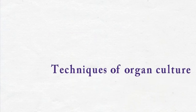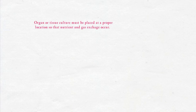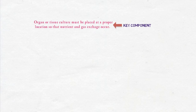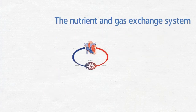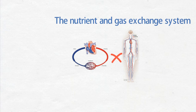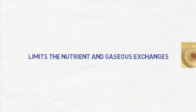The most important requirement of organ culture or tissue culture is to place them at such a location so that optimal nutrient and gas exchange occur. Nutrient and the gas exchange system play an important role in the technique of organ culture because there is no vascular system as in our body in the organ culture. This limits the nutrient supply and gas exchanges of the cells.